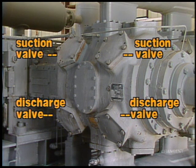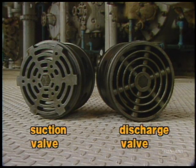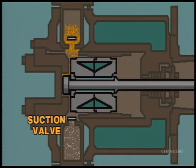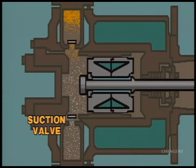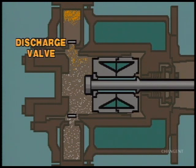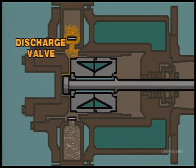Each cylinder also contains two sets of valves: suction and discharge. These valves look similar, but gas travels through them in only one direction. As suggested by their names, a suction valve allows gas to enter the cylinder for compression, while the discharge valve lets the compressed gas leave the cylinder.